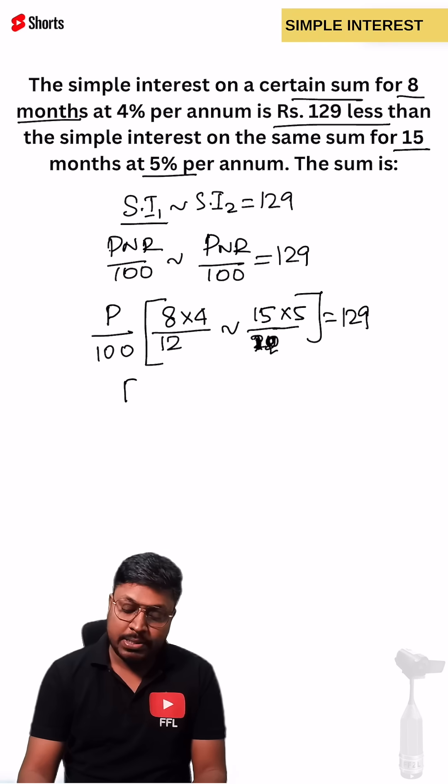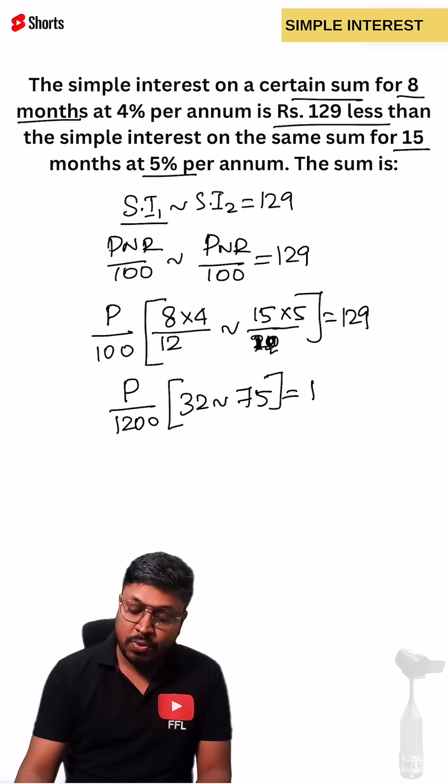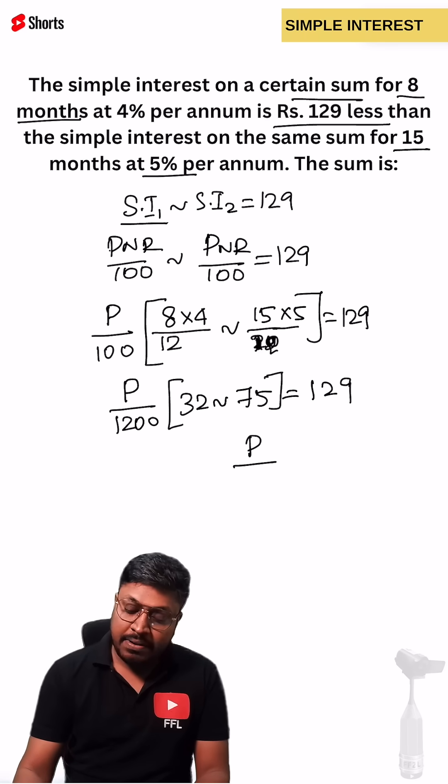So we can take 12 outside, so P divided by 1200. So this will be 32, this will be 75 equals 129. So P divided by 1200 times 43 equals 129.